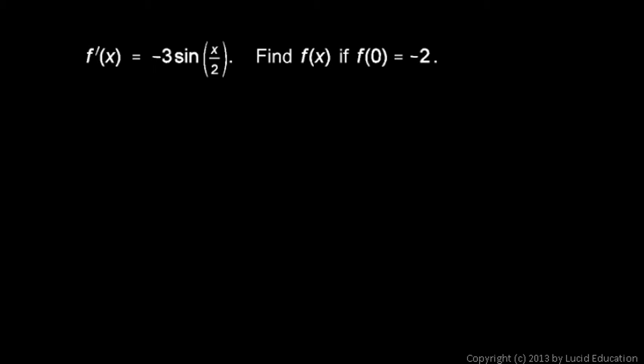In this problem, we're told that f prime of x is negative 3 sine x over 2, and we're told to find f of x, and we're given this initial condition. Find f of x if f of 0 is equal to negative 2.